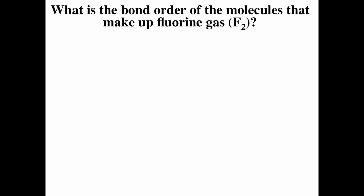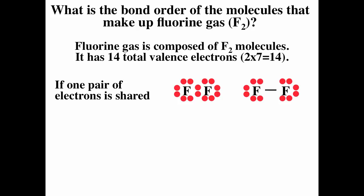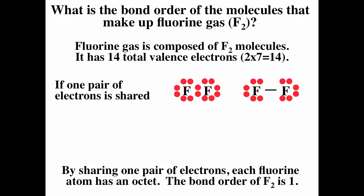What is the bond order of the molecules that make up fluorine gas (F2)? Fluorine is in the seventh column — two times seven gives us 14 valence electrons. Assuming a single bond between the two fluorines and distributing remaining electrons as lone pairs, we use all 14 valence electrons. Each fluorine sees eight electrons — noble gas configuration. By sharing a pair of electrons, each fluorine gets noble gas configuration. Single bonds always have a bond order of one, so the bond order for F2 is one. Bond order is the number of pairs of electrons being shared.